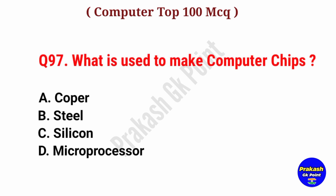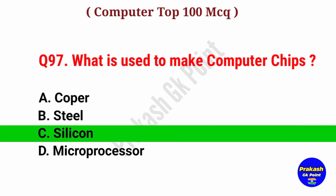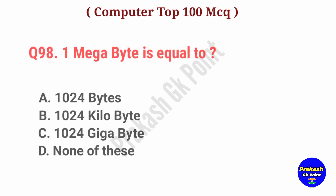What is used to make computer chips? Answer: Option C, Silicon.